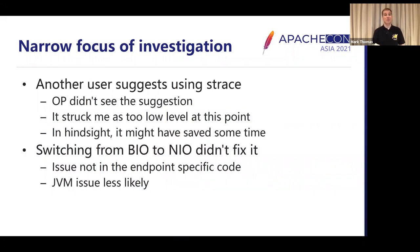At this point on the mailing list, one of the other users suggested we use strace. For me, it felt like a bit too low level — strace is something I use when I suspect the operating system is playing up and I wasn't there yet. This felt more like a possibly application, possibly Tomcat, possibly JVM issue. So strace didn't really seem appropriate. In hindsight, it probably would have saved us some time. What we did do was try switching from BIO to NIO. That didn't make any difference, which is really helpful because it tells us it's not in the BIO or NIO-specific code, and also tells us it's not likely to be in the JVM because the BIO and NIO code in the JVM are incredibly different.